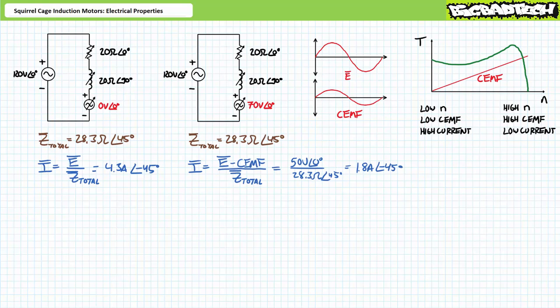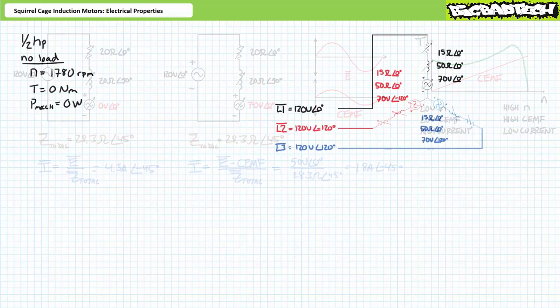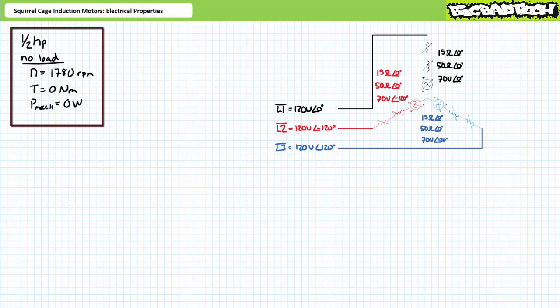Every component inside this model changes at different points of the speed torque curve. Given specified supply voltage magnitude, counter-electromotive force magnitude, and impedance values, it should be well within your capacity to calculate current and power. For this series of examples, let's use a half-horsepower motor with a synchronous speed of 1,800 RPM, intended to operate using 120-volt line-to-neutral, 208-volt line-to-line, 60-hertz, three-phase AC in a Y configuration.